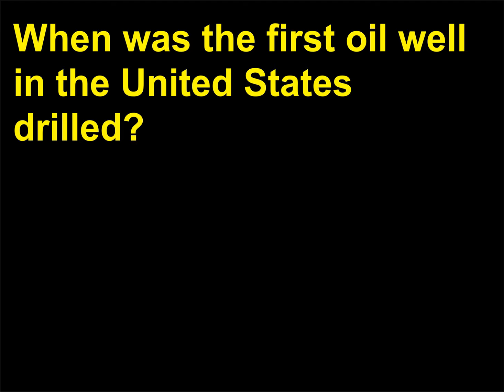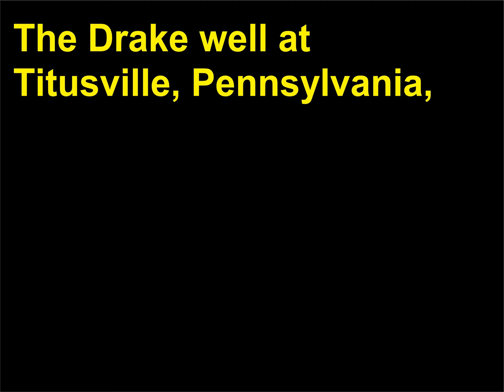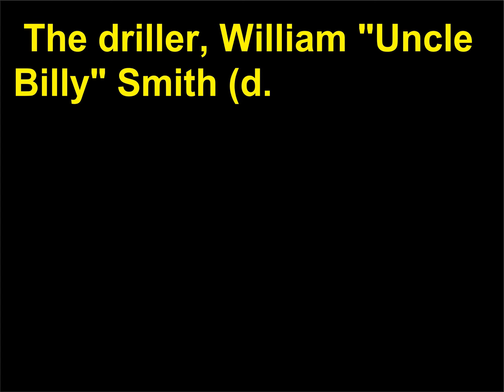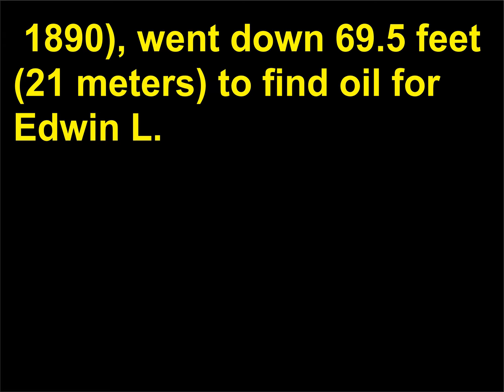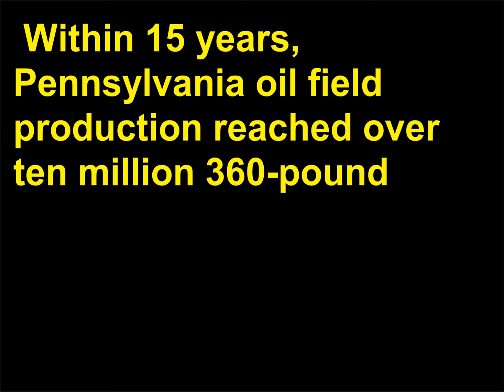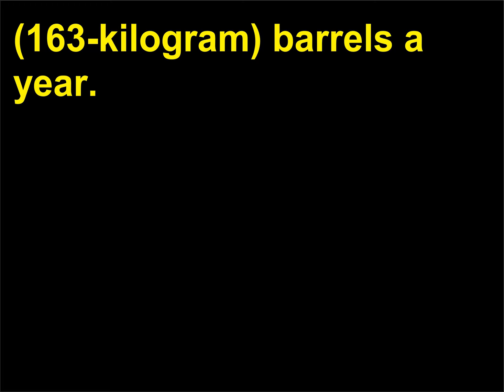When was the first oil well in the United States drilled? The Drake well at Titusville, Pennsylvania was completed on August 28, 1859 (some sources list the date as August 27). The driller, William 'Uncle Billy' Smith, went down 69.5 feet (21 meters) to find oil for Edwin L. Drake (1819–1880), the well's operator. Within 15 years, Pennsylvania oil field production reached over 10,360 barrels a year.